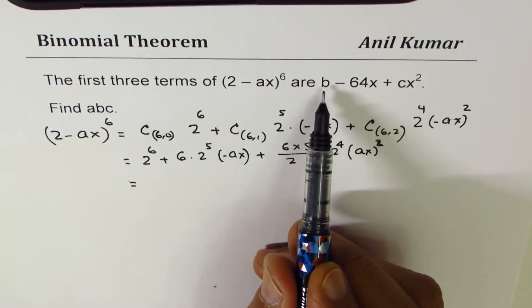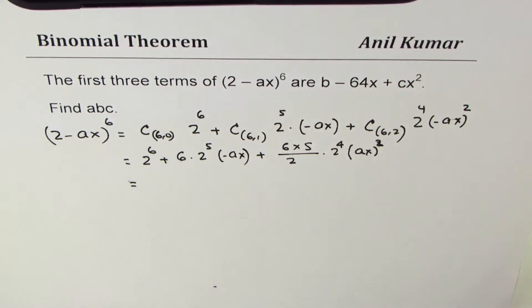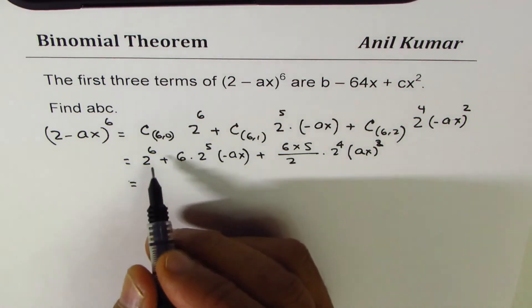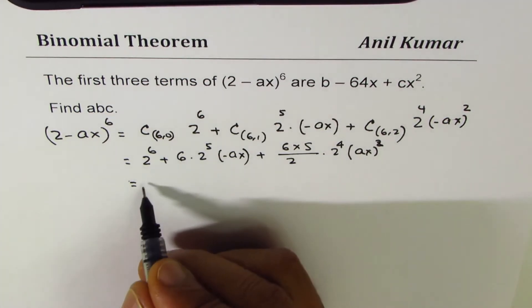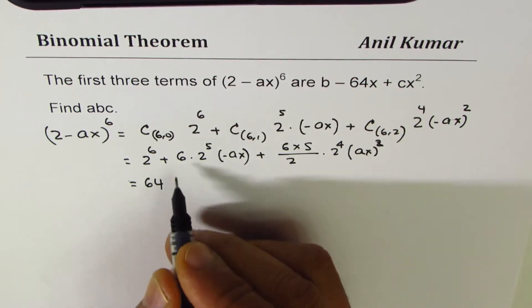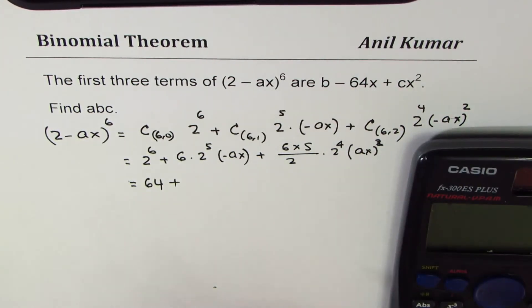Minus becomes plus in this case. Now we can compare the terms. If you compare the terms, b should be equal to 2^6. So let's compare the terms at this stage, or let me go one more step. We can use calculator also to calculate.